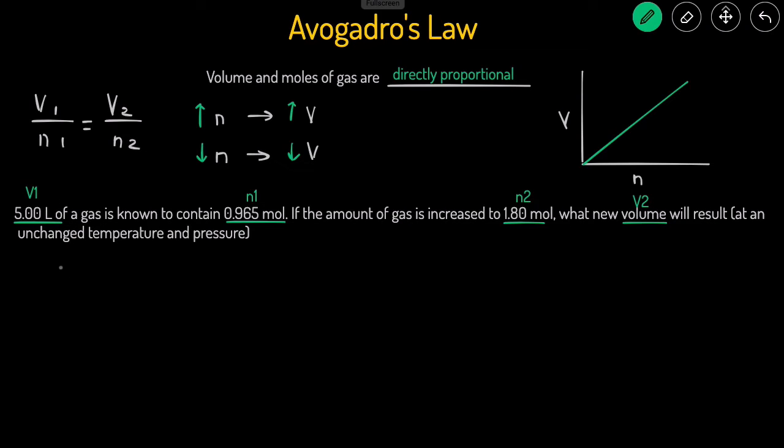So then we can just substitute into the equation. V1 is 5 liters. N1 is 0.965 moles. V2, that's what we're trying to solve for. And then the final moles, N2, is 1.8.